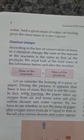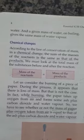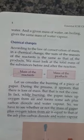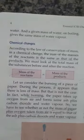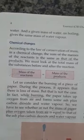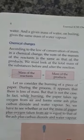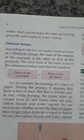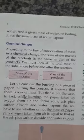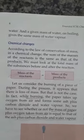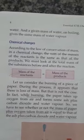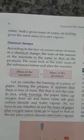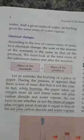Next we are taking chemical changes. Chemical changes also obey the law of conservation of mass. In a chemical change, the sum of the mass of reactants is the same as that of the products — that is, mass of reactants equals mass of products.